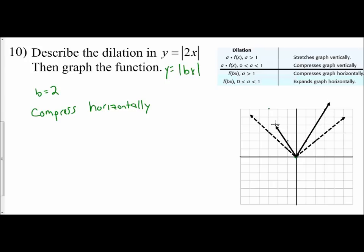Now we see our dilation. The graph looks compressed, smashed in from the left and right sides to compress it horizontally. That's because our b value was greater than 1.